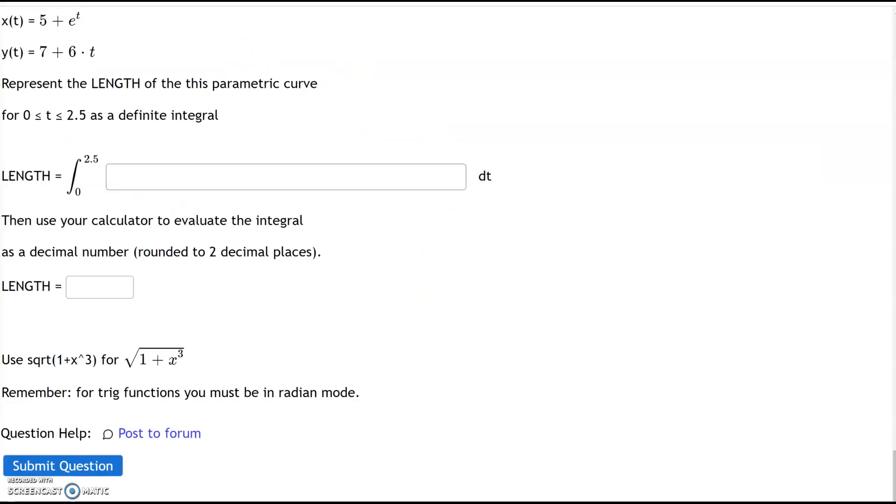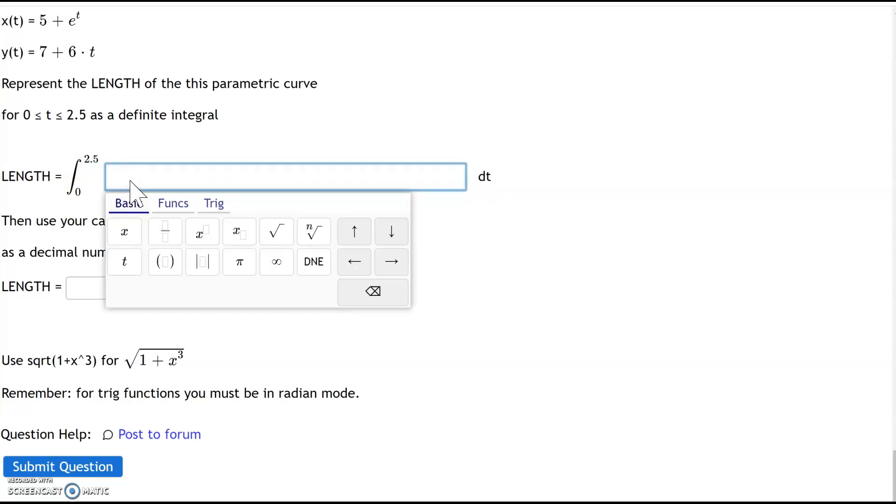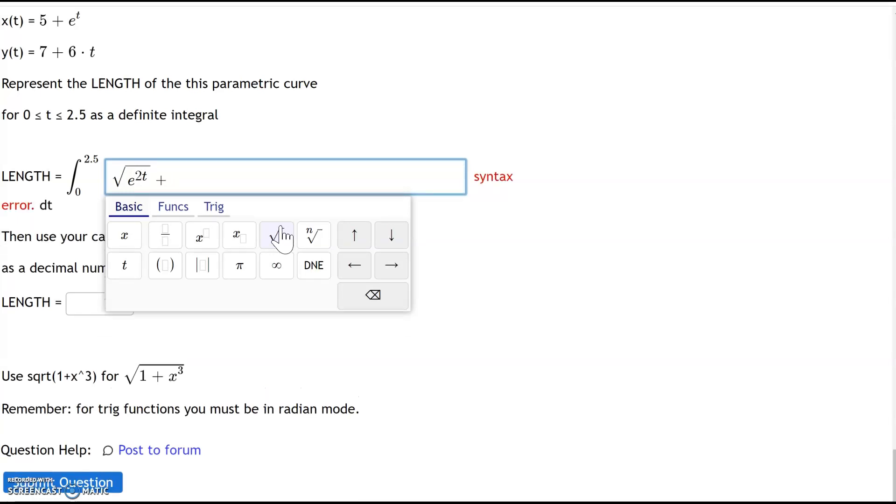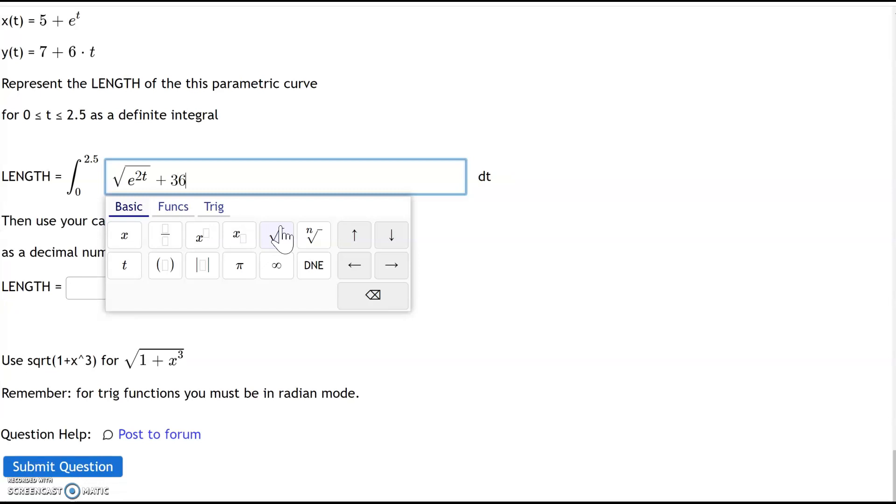So let's type that in right here. The integral sign and the boundaries are already input for us, so just type in the integrand. You can click the square root symbol right there, and then e to the 2t power, and then plus 36. And then the dt is also written for us as well.